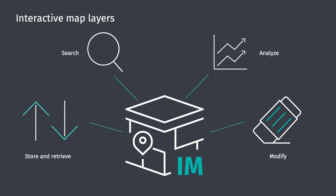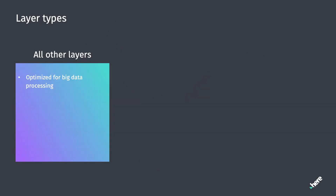Before we dive into the specifics of interactive map layers, it is important to first understand how these layers differ from the other layer types available in the HERE platform. Each layer has a different set of characteristics, and therefore is optimized for a different set of geospatial data use cases. All other layers are optimized for big data processing, and the major difference of the interactive map layer is that it is optimized for visualization, analysis, and modification of data on a map.